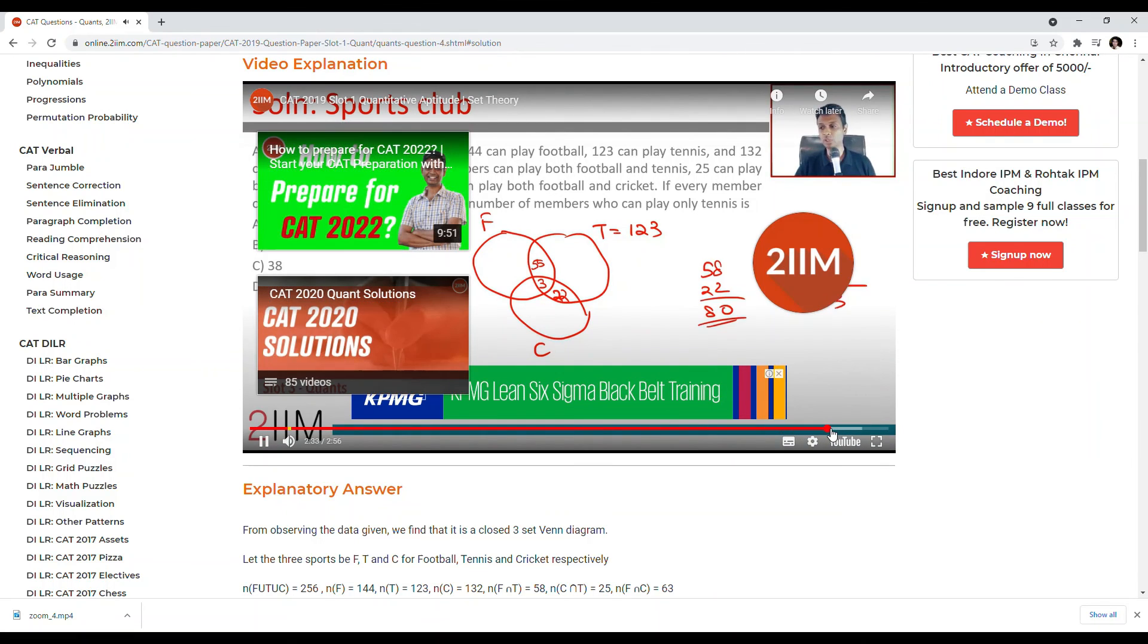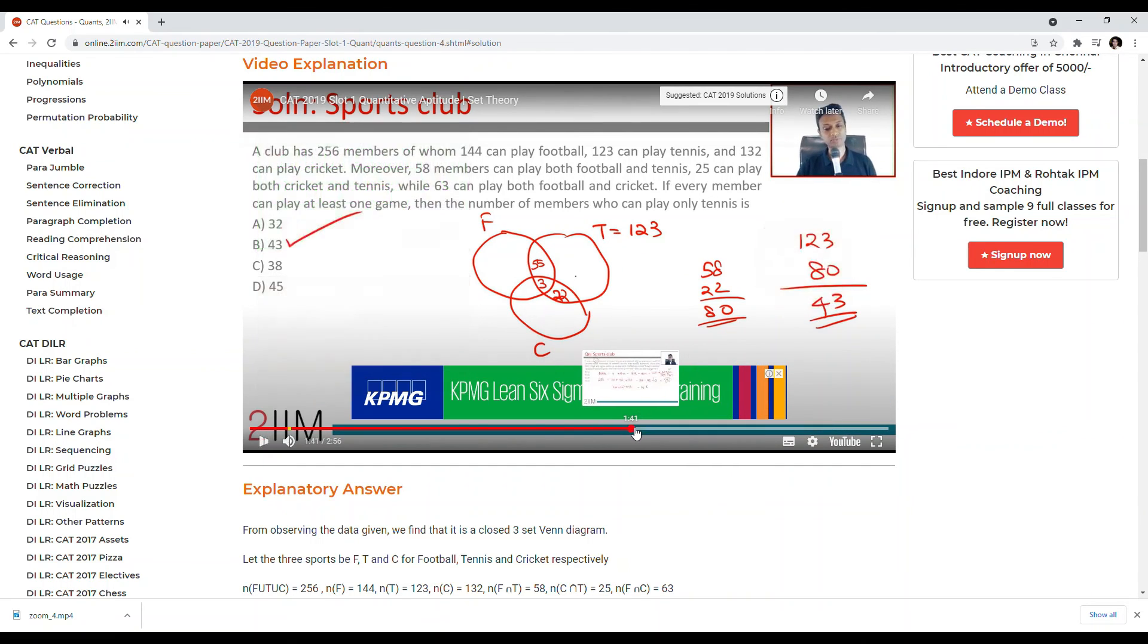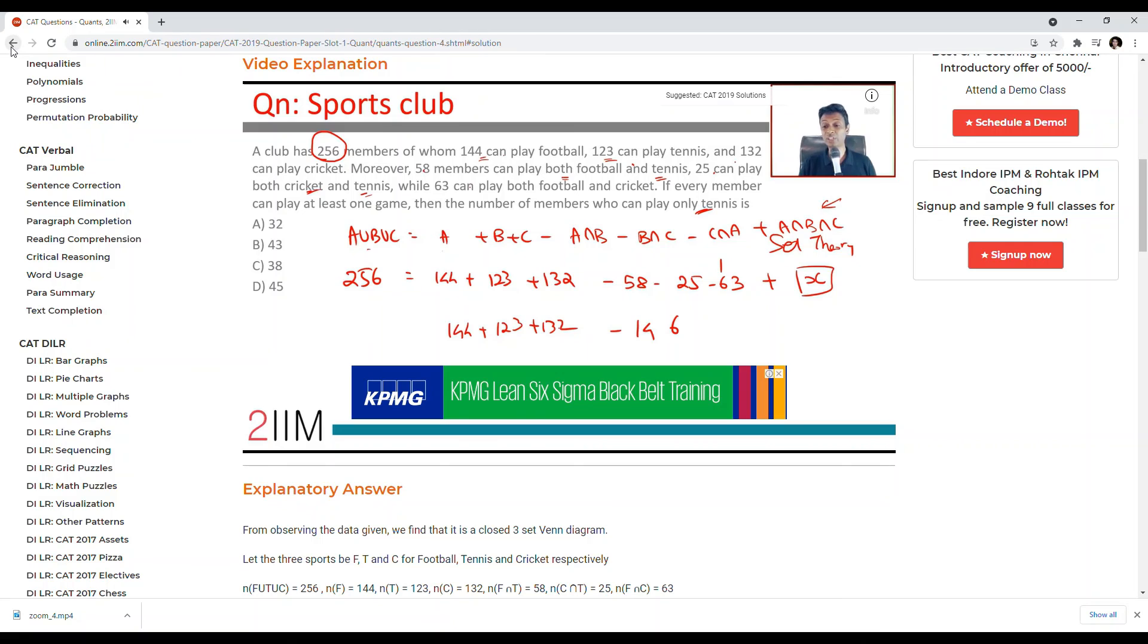Cricket and tennis remaining 43 play tennis only. 132 minus 2 is 130.